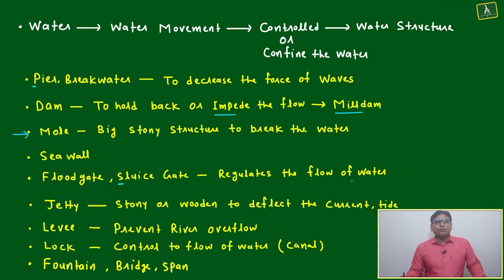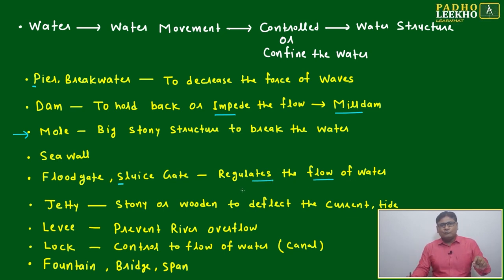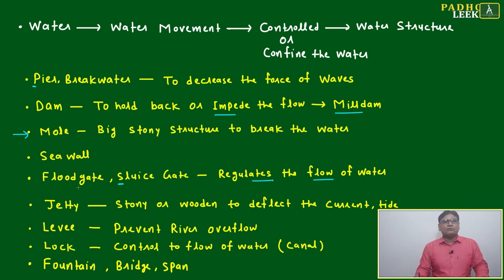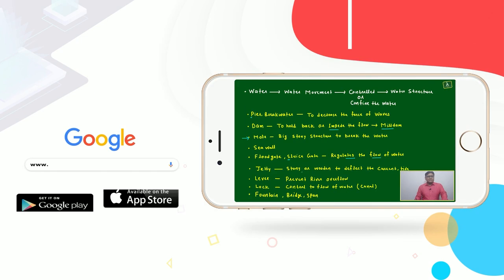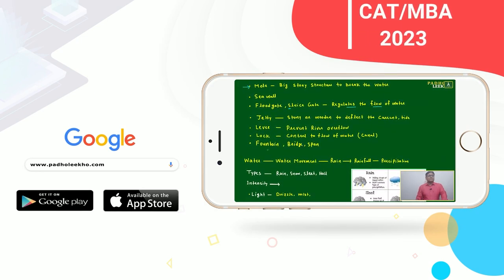A floodgate or sluice gate is used to regulate the flow of water — to release or control it. A jetty is a stony or wooden structure to deflect the current or tide. Other water structures include fountains, bridges, and spans.